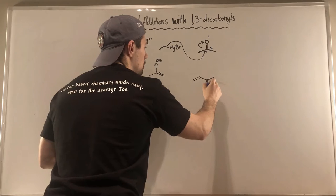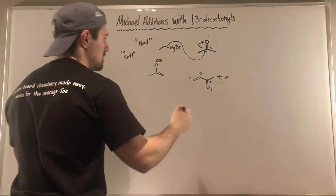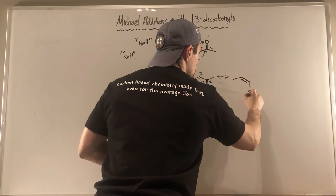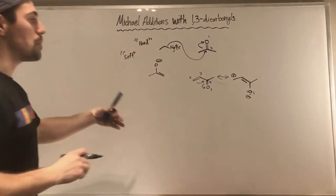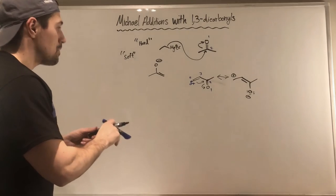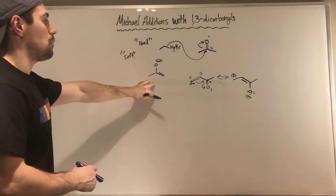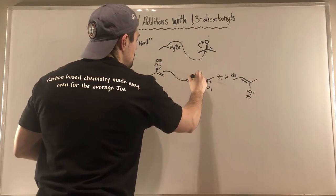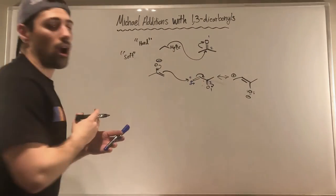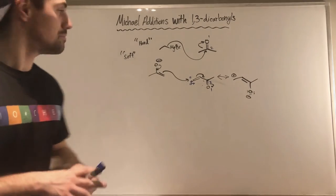The way you number the system for a 1,4 addition starts with the oxygen in the carbonyl as 1, then 2, 3, and 4. You can do a 1,4 addition because this is a conjugated system — sp2, sp2, sp2, sp2. Drawing the resonance shows we have a resonance hybrid where the fourth carbon has a partial positive charge. So with a soft nucleophile facing a system that lends itself to 1,4 addition, it will add in a 1,4 fashion. If you need more clarification, highly suggest watching the original Michael addition video first.